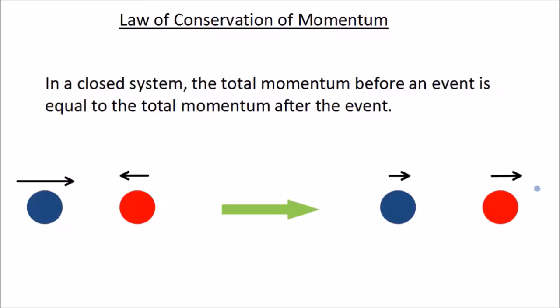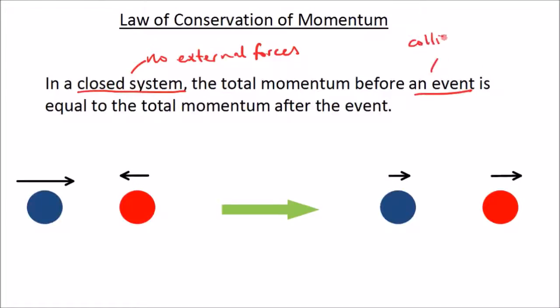So what happens to momentum when two things collide? This is governed by the law of conservation of momentum, which states that in a closed system the total momentum before an event is equal to the total momentum after the event. What we mean by closed system is that there are no external forces acting on these objects.